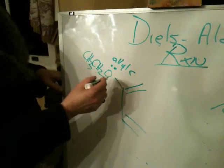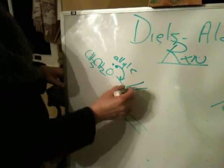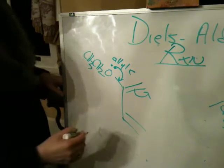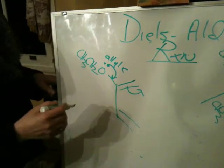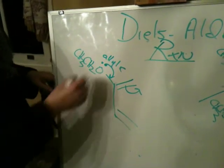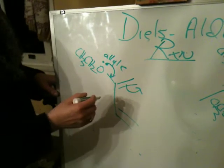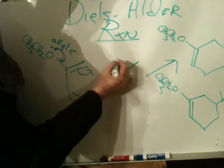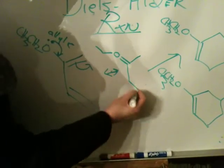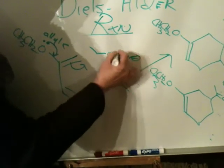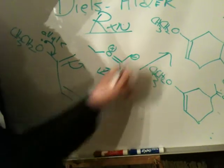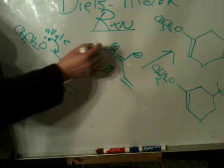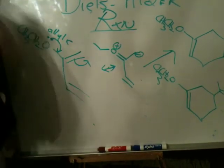Similar to an anion, I can take this pair of electrons and push them in and then out on this carbon. In this particular case, this is the only reasonable resonance form I can draw. My resonance form is going to look like this, with a negative charge on the N carbon and a positive charge on the oxygen.